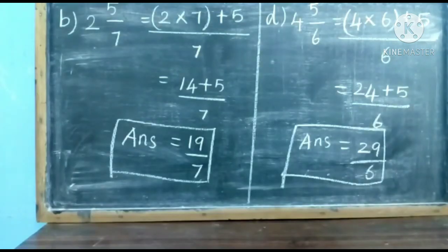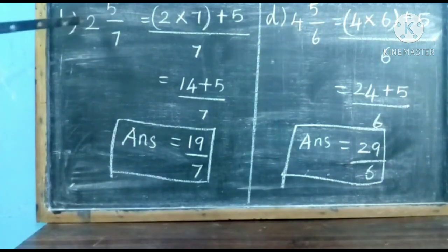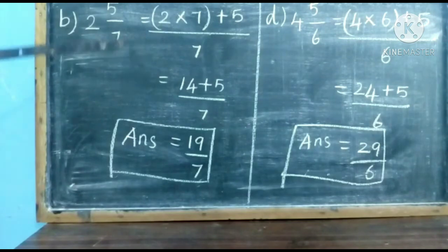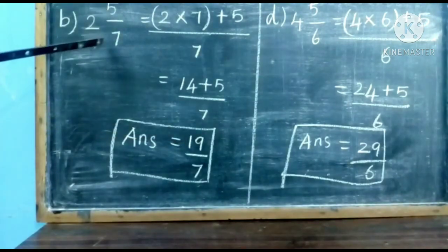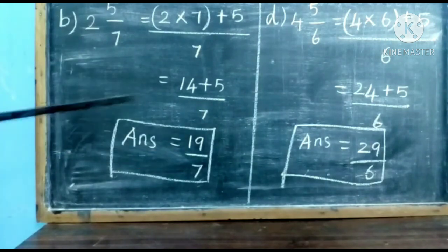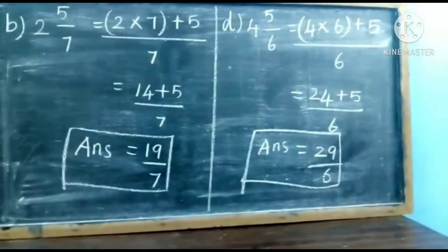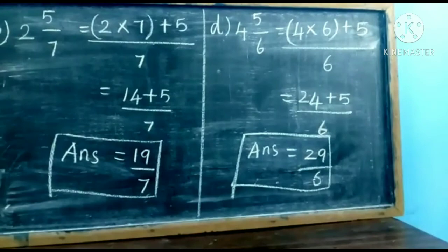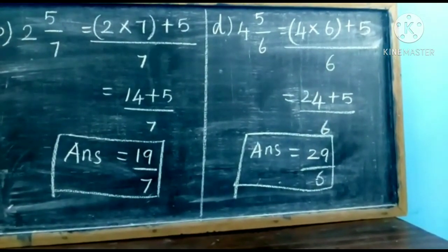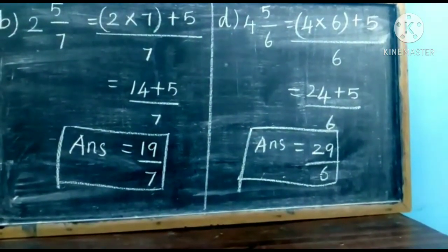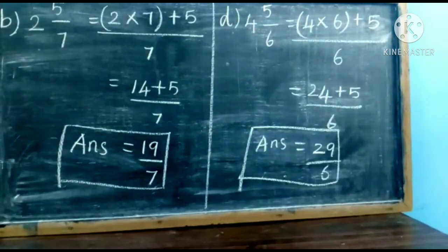Let us solve two more problems. For 2 and 5 by 7: multiply 2 with 7 — 2 sevens are 14, then 14 plus 5 is 19, and the denominator is 7, so the answer is 19 by 7. For 4 and 5 by 6: multiply 4 with 6 — 4 sixes are 24, plus 5 is 29, so the answer is 29 by 6.